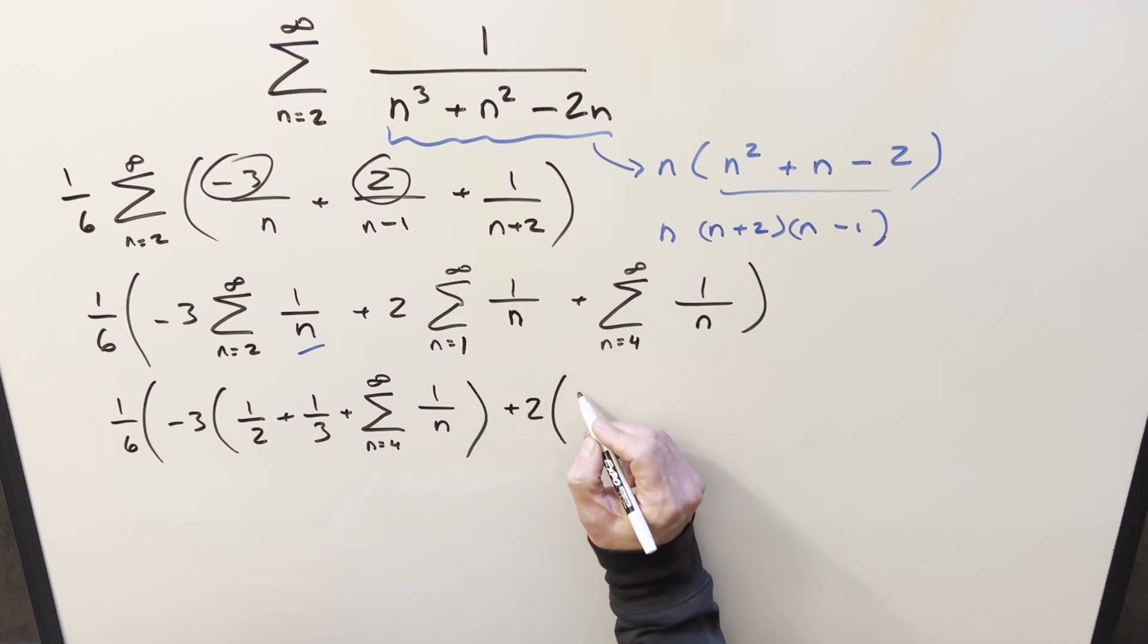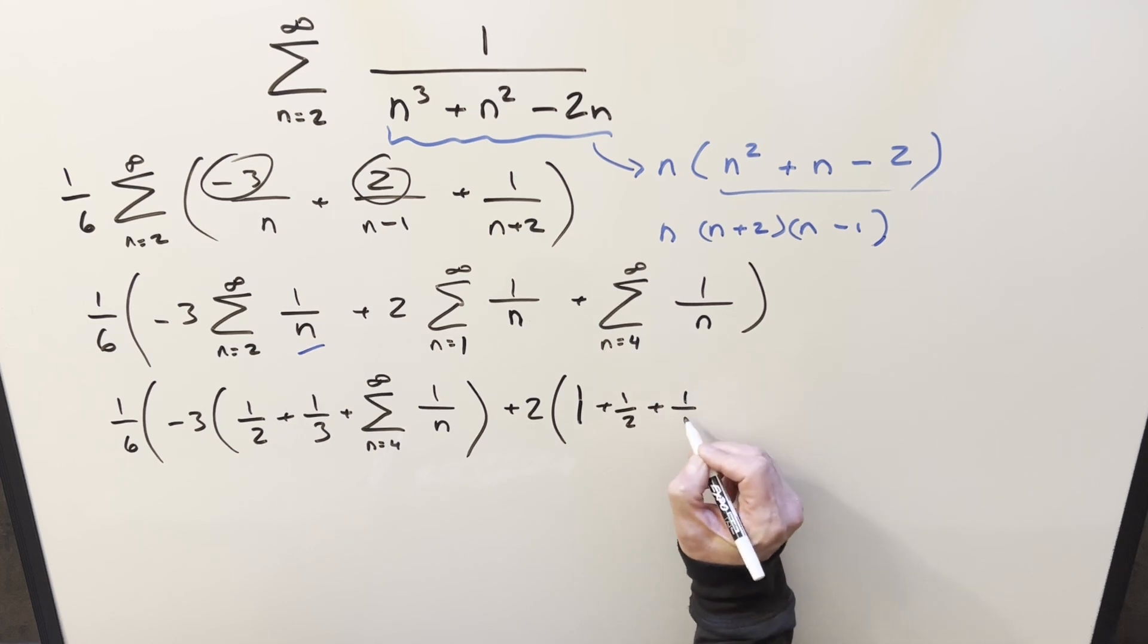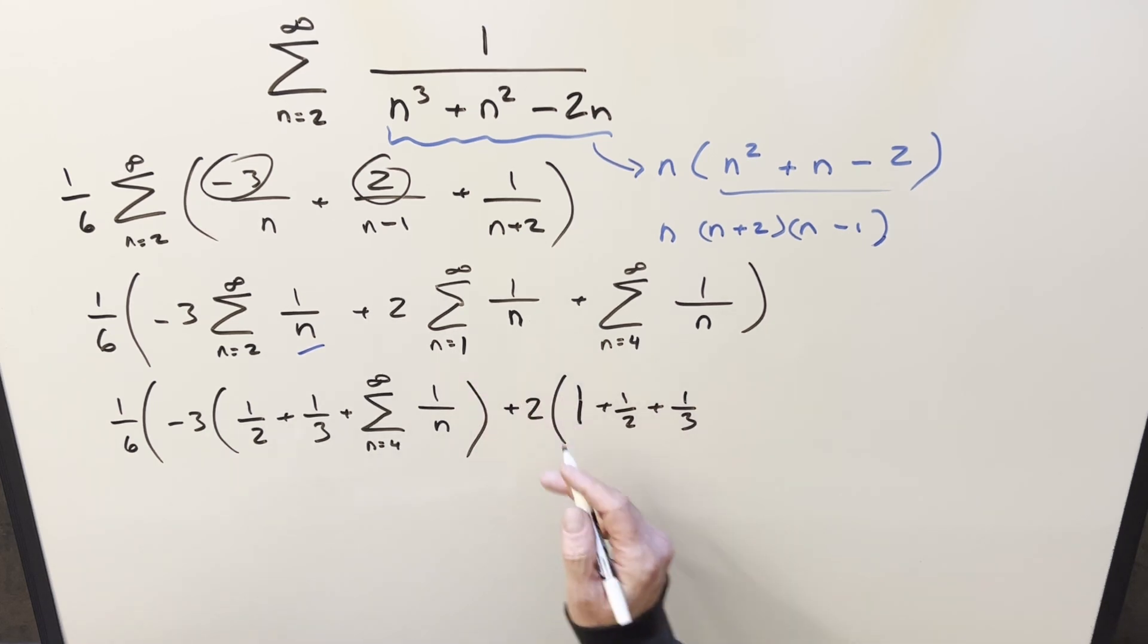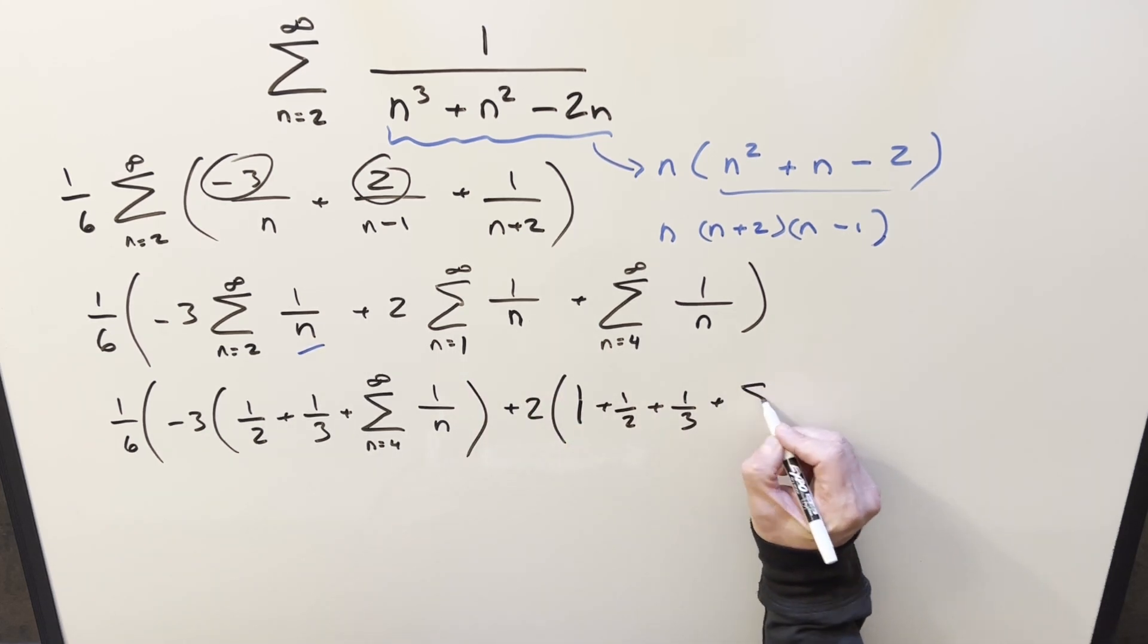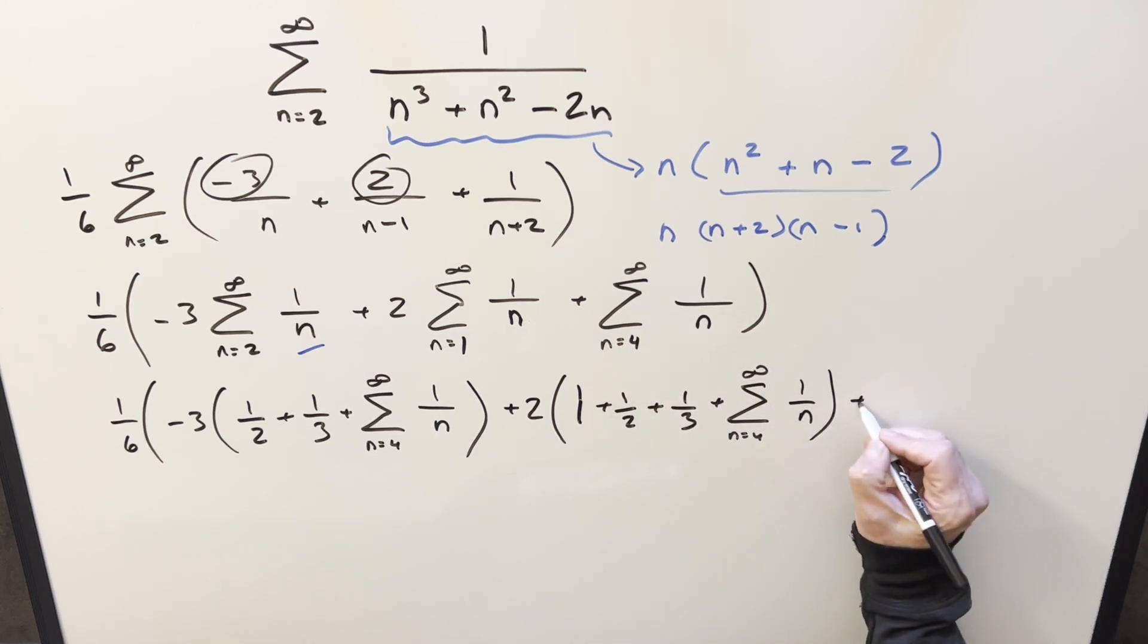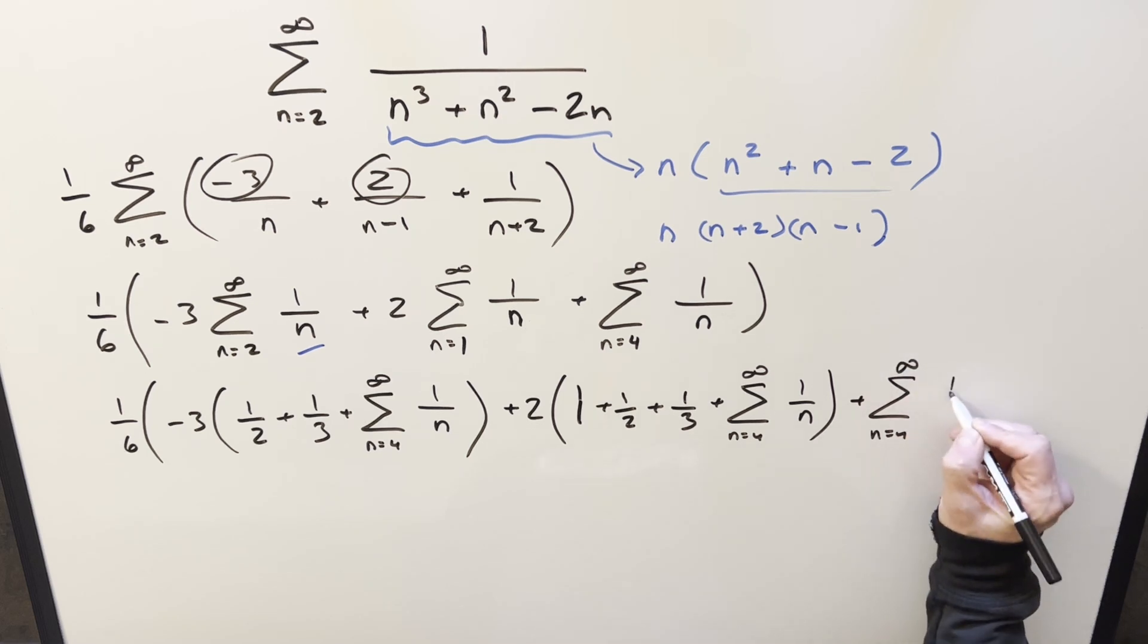Doing the same kind of thing on this one, we've got the 2 out front, plug a 1 in, we get 1 over 1 or just 1, plug a 2 in, half, 1 over 3, and then we've got our sum starting at n equal 4. And then last, we just have this piece right here, so it's just going to be the same sum, n equals 4 of 1 over n.